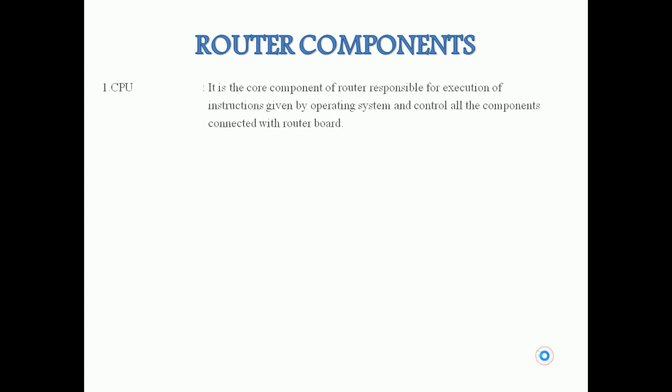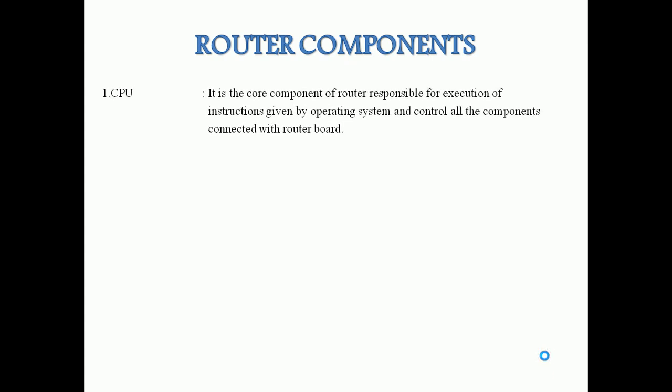The first component is the CPU — the Central Processing Unit. As you know, the CPU is the core component of any computing device. In the router, it is responsible for executing instructions given by the operating system and controlling all the components connected to the router board. So the router is also like a computer, using a CPU responsible for executing commands and controlling all connected devices.